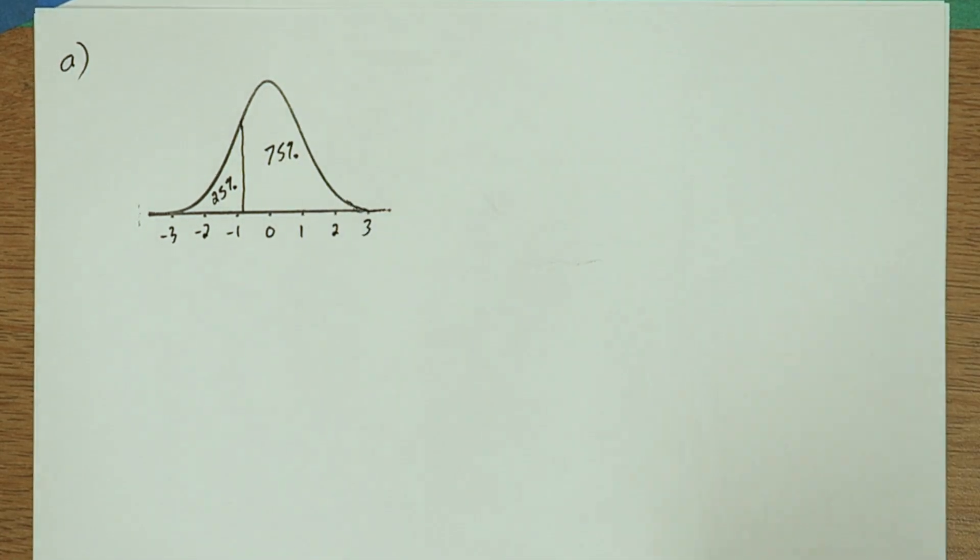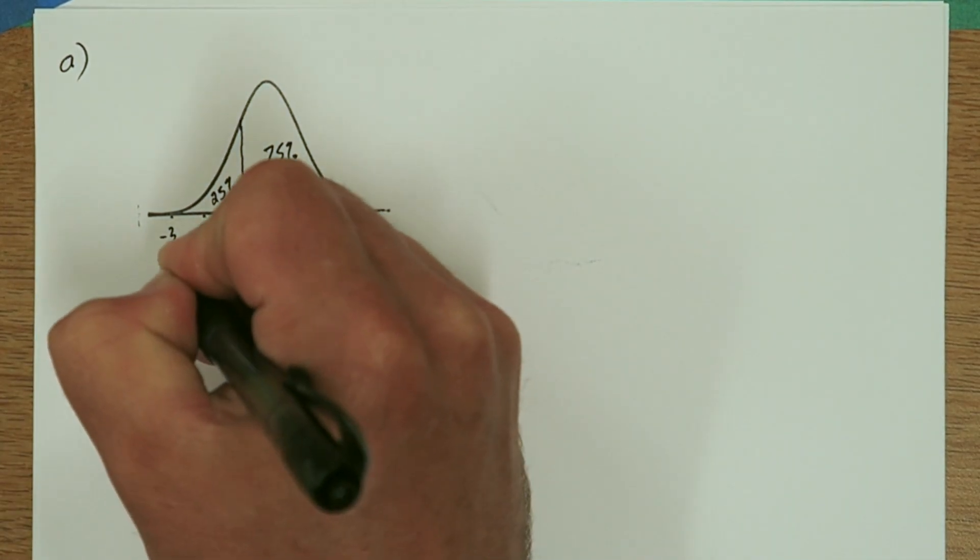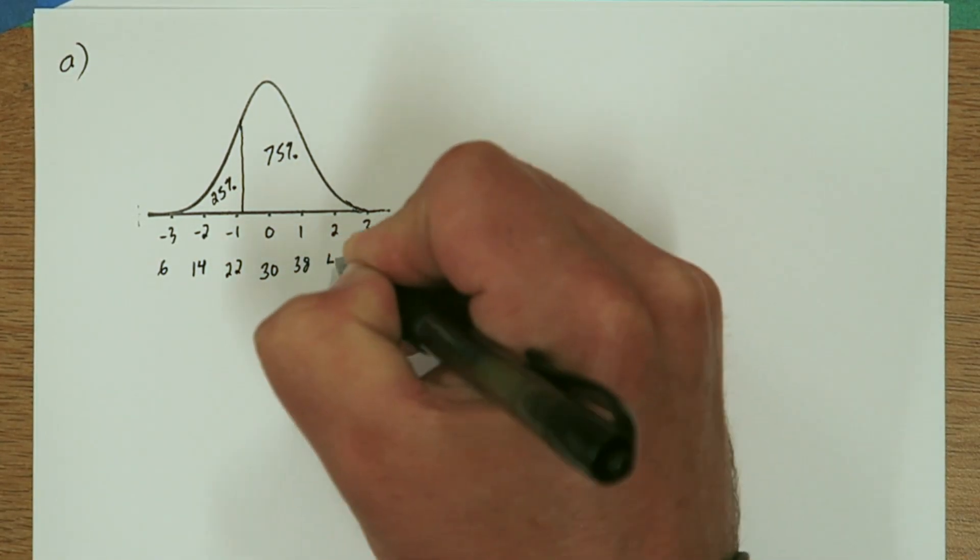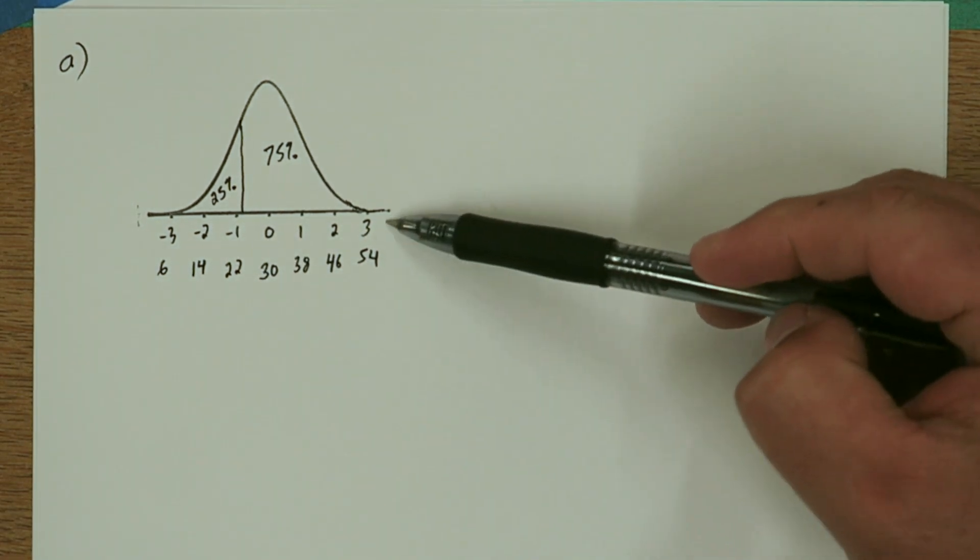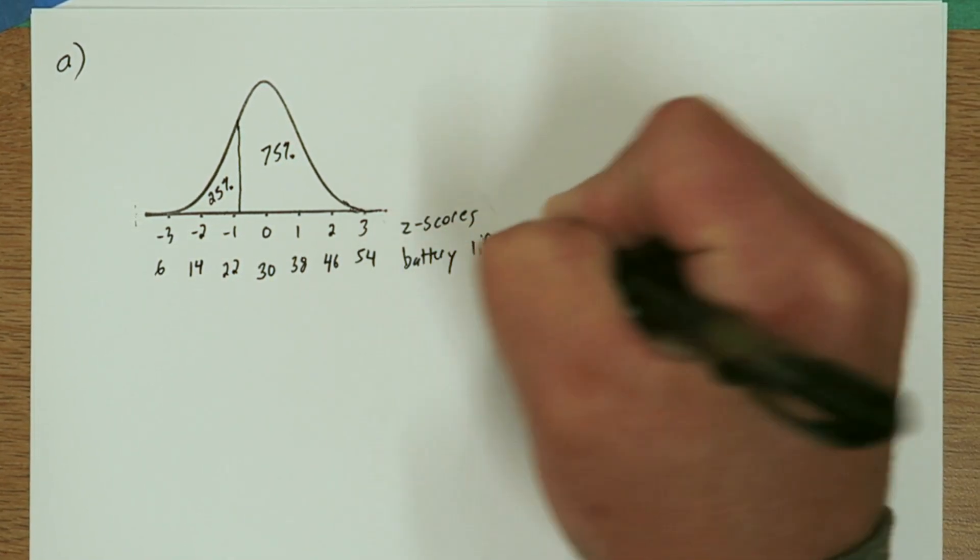So we'll start by stamping a normal curve and labeling it with the mean at zero and we'll go out three standard deviations. And from the stem of the problem we found out the mean of the battery life is 30 and the standard deviation is 8. So we've labeled the axis two ways in Z scores and in battery life.